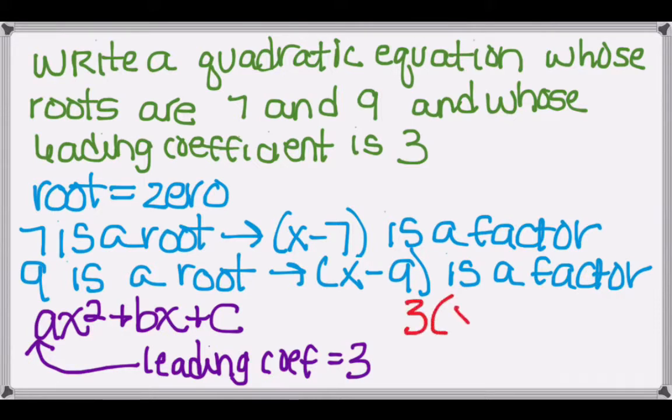So now to actually write our quadratic equation, we can just put the 3 in front to indicate the leading coefficient, and then write our two factors, and it doesn't matter the order that we write our two factors in. So we get 3 times (x minus 7) times (x minus 9).